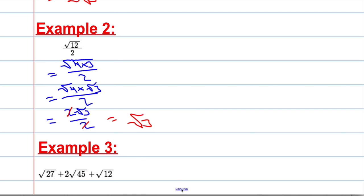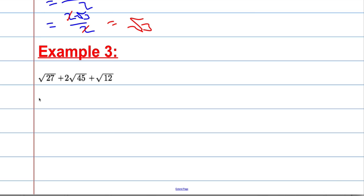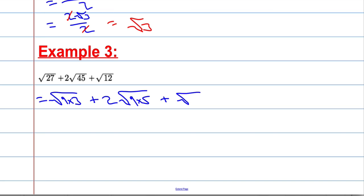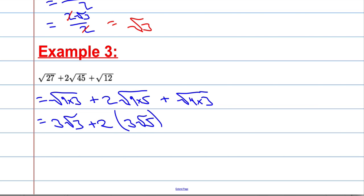Last example for simplifying surds. We have root 27. Let's think of two numbers that multiply together to make 27 where one is a square number — 9 and 3 will do nicely. And then we're going to have two lots of root 45, where two numbers multiply to make 45 — 9 times 5. And then root 12, which we've already done — that's 4 times 3. So root 9 times 3 is simply 3 root 3. And this root of 9 times 5 is the same as 3 root 5, plus 2 root 3.